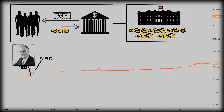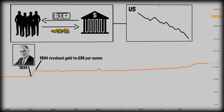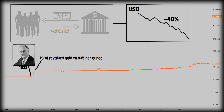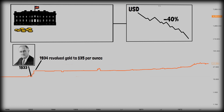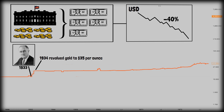Then in 1934, under the Gold Reserve Act, FDR raised the official gold price to $35 per ounce. This meant the dollar was worth less in gold — a devaluation of about 40%. This gave the government more dollars for every ounce of gold it held, effectively increasing the monetary supply, helping end deflation and stimulate the economy.